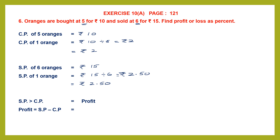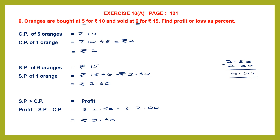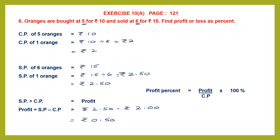Selling price is 2 rupees 50 paise minus cost price which is 2 rupees. 2 rupees 50 paise minus 2 rupees is simply 50 paise. So the profit is 0 rupees 50 paise, or 0.50 rupees. Now we can find the profit percent. Profit percent is profit into 100 divided by cost price. So profit is 0.50 divided by cost price 2 rupees, into 100 percent.